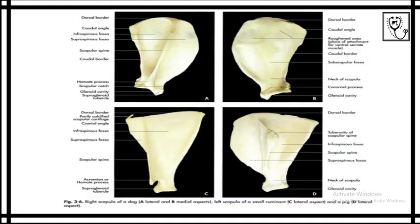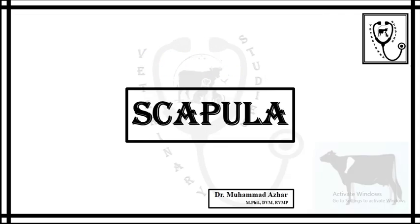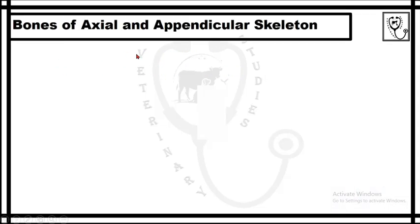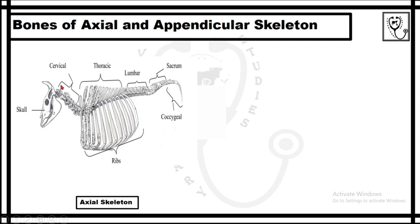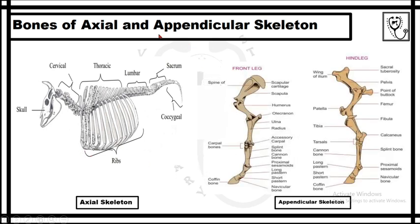These are the contents which I am going to discuss in today's lecture. Before going to the topic, I want to tell you about the animal skeleton. The animal skeleton is divided into the axial skeleton and the appendicular skeleton. The axial skeleton comprises the skull, vertebral column, ribs, and sternum.